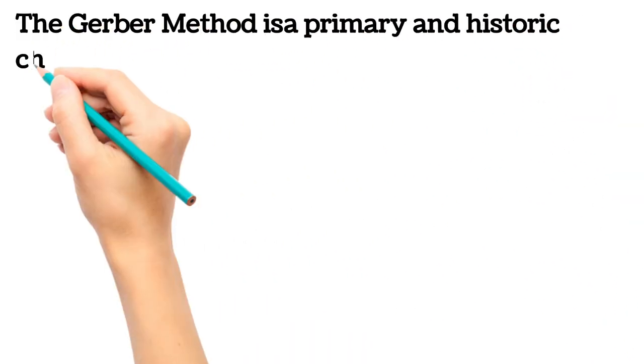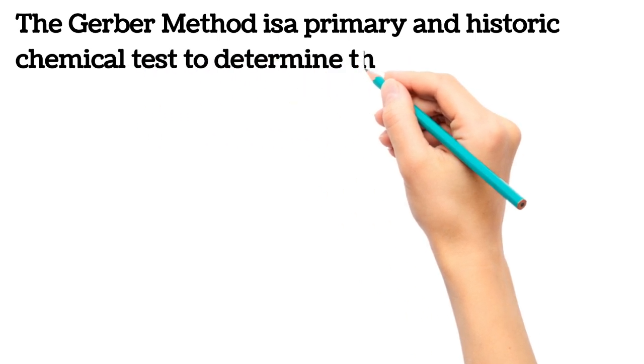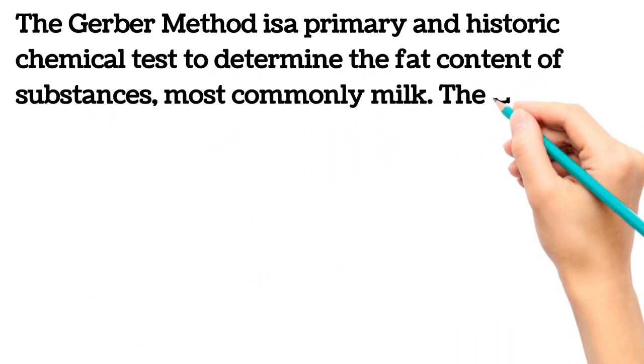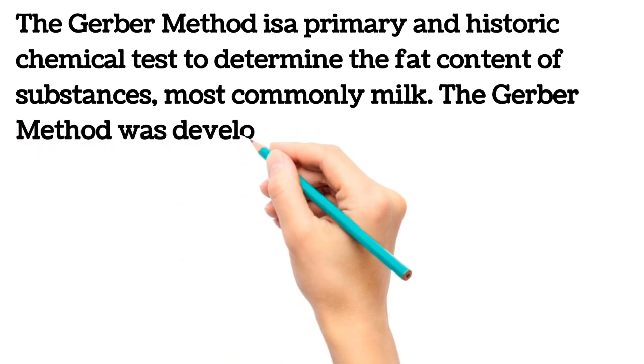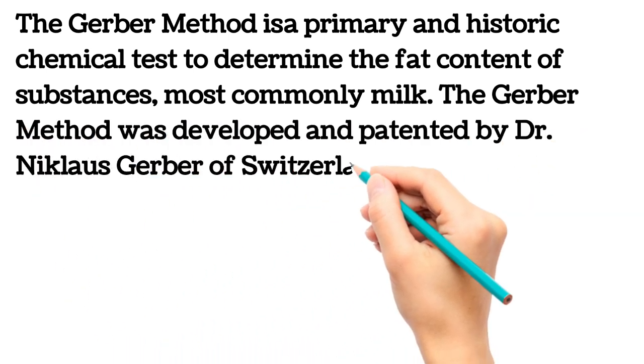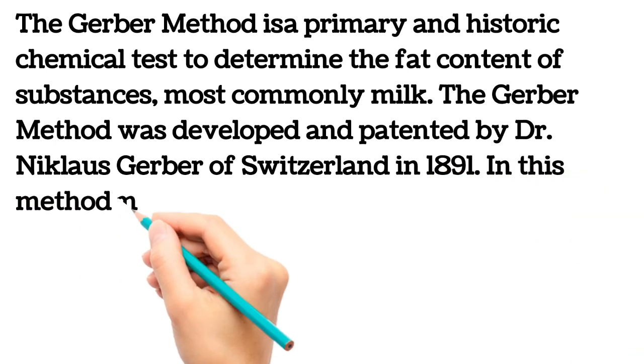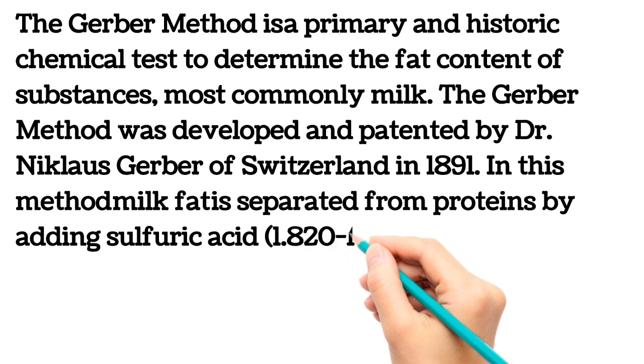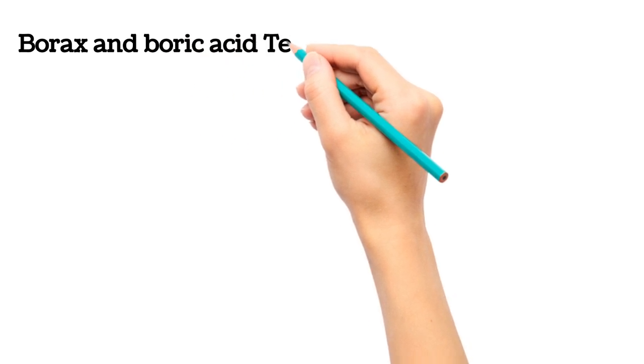What is the Gerber method? It is a primary and historic chemical test to determine the fat content of substances most commonly in milk. The Gerber method was developed and patented by Dr. Nicholas Gerber of Switzerland in 1891. In this method, milk fat is separated from proteins by adding sulfuric acid of that particular specific gravity.